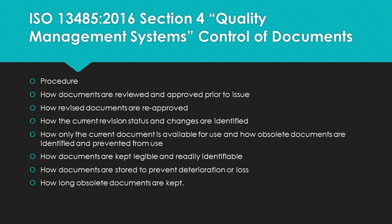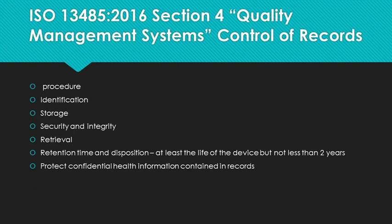Once the documents are controlled, your company needs to look at how it will control records. The easiest explanation I can give is a document tells how to do the process and a record shows exactly how you did the process. For example, a work instruction on how to weld a component to a medical device is a procedure; a form that records which welder, which personnel, and what lot of rod is used is a record. The records procedure should address identification, storage, security and integrity, retrieval, and retention time and disposal. The retention time must be the life of the device, but not less than two years. The procedure must also address how they protect confidential health information if it is contained in the records.